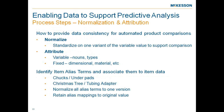You also need to look at alias terms and associate that information back to the item data. So if an end user types 'Christmas tree,' they get the tubing adapters. If they type 'chucks,' they get the under pads. The alias term is just another fixed attribute against that type of product. You normalize these alias terms to that individual version of the information and retain those alias mappings back to the original value.